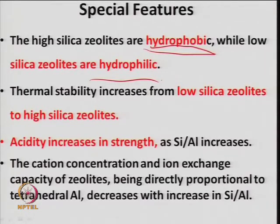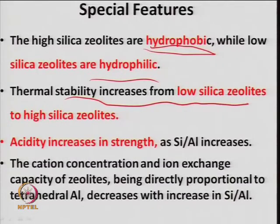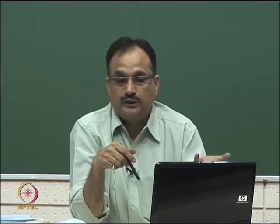Thermal stability increases from low-silica zeolites to high-silica zeolites. If the silica is high in the framework, the zeolite will be stable. One must tune the silicon-to-aluminum ratio for acid concentration, acid strength, and stability together. ZSM-5, for example, cannot sustain temperatures above 550°C, so for cracking reactions above 550°C, additives may be needed to increase stability.